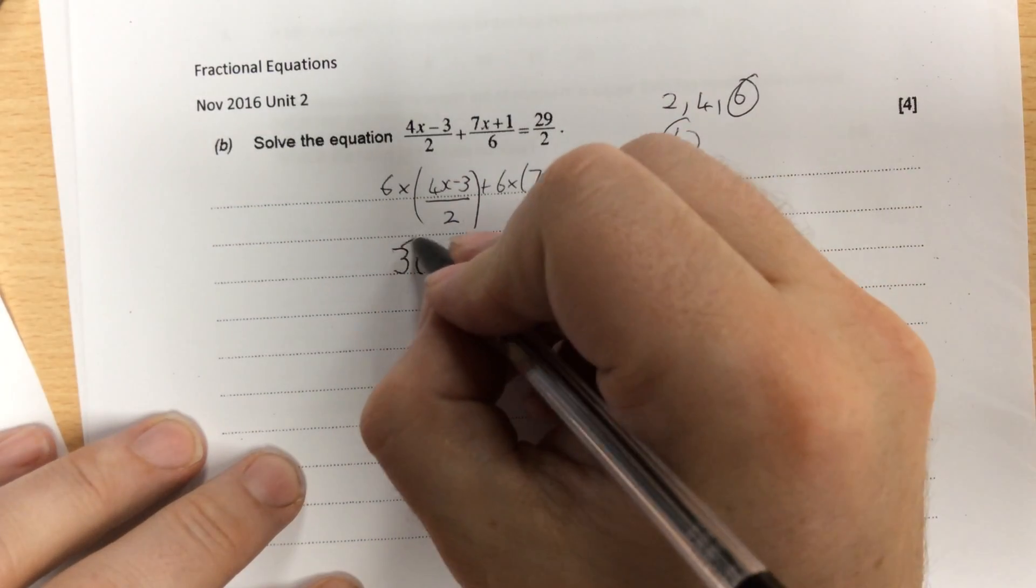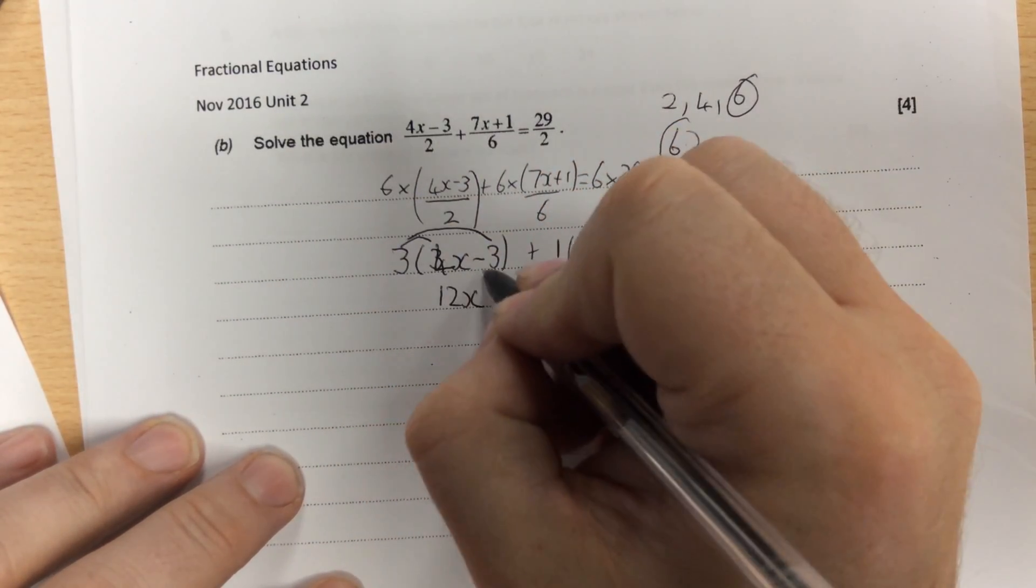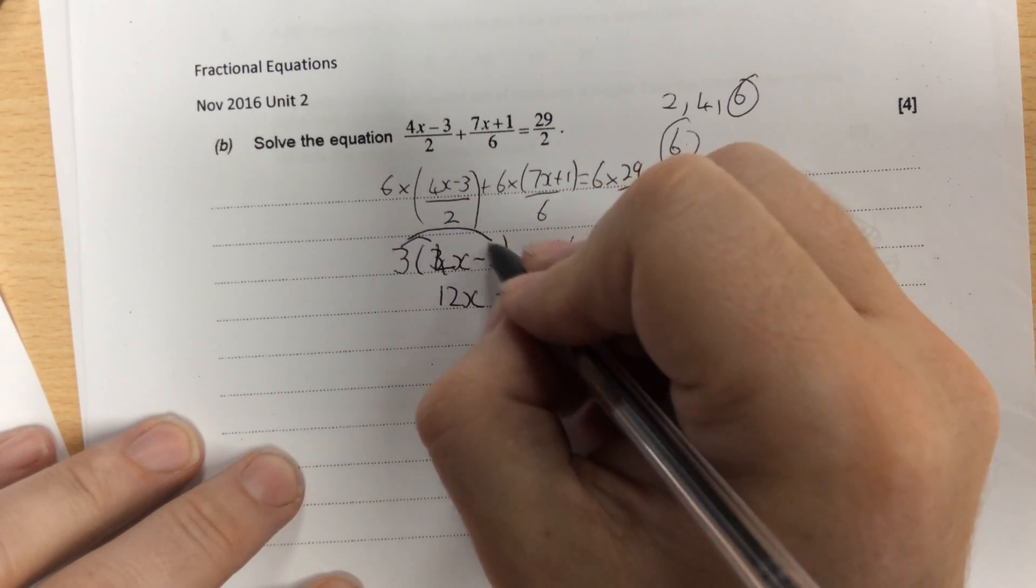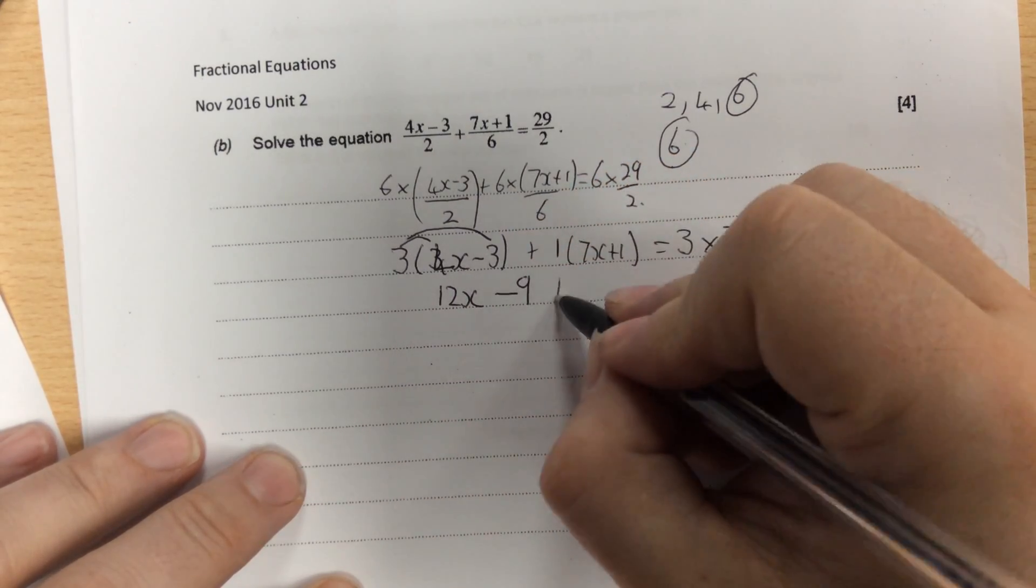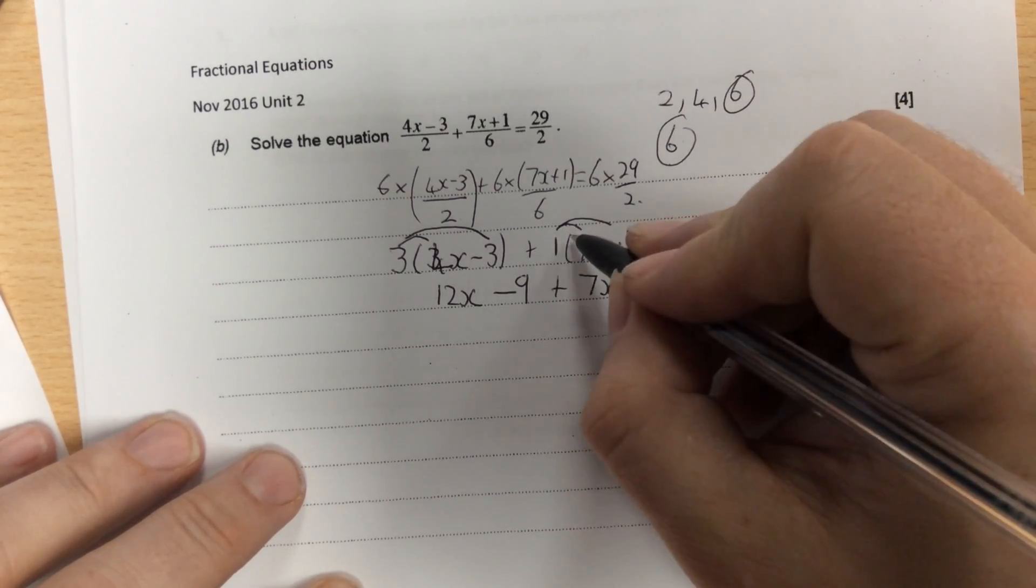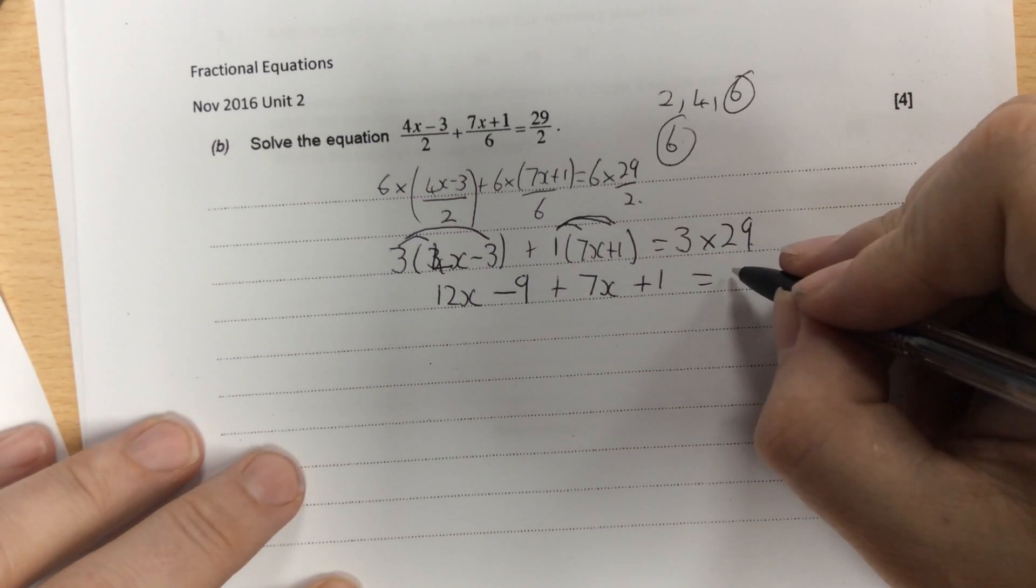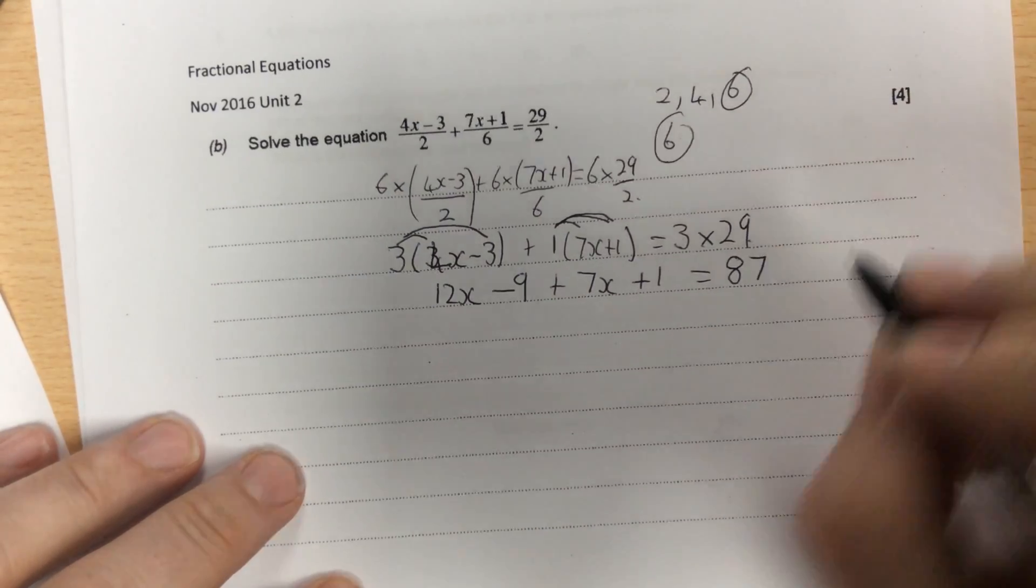Whenever you see a bracket, you multiply it out. So 3 times 4x is 12x. Take away 3 times 3 is 9, plus, let's do the next bracket, 1 times 7x is 7x, and 1 times 1 is 1. And 3 times 29 is 87.